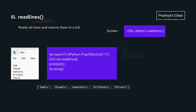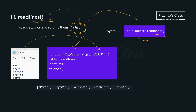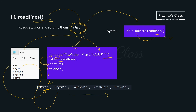The third function is readlines(). It reads the data from the file in the form of a list. The syntax is file_object.readlines(). We open file3 in read mode and use readlines(). The data comes back as a list that we print. In the output, the first line is the first element of the list followed by backslash n, the second line is the second element, and so on — all data from the file is read this way.